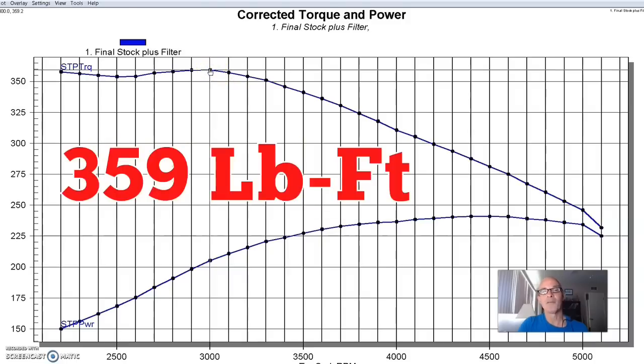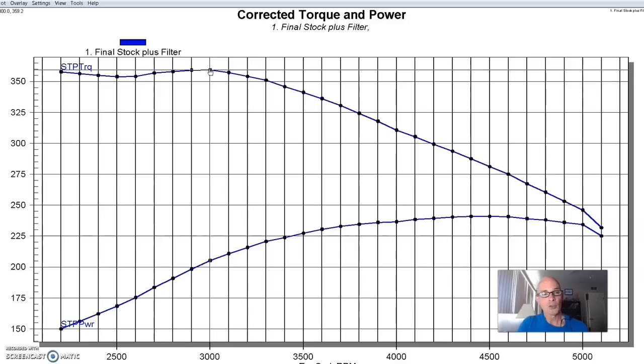So equipped with that two barrel and the stock exhaust manifolds, this 350 made 241 horsepower and 359 foot pounds of torque. As you can see, the torque number is actually not too bad, more than one pound foot per cubic inch, which is okay, but the horsepower number not great for a small block 350. Only 241 horsepower, that's not very much, but that's the two barrel manifold.